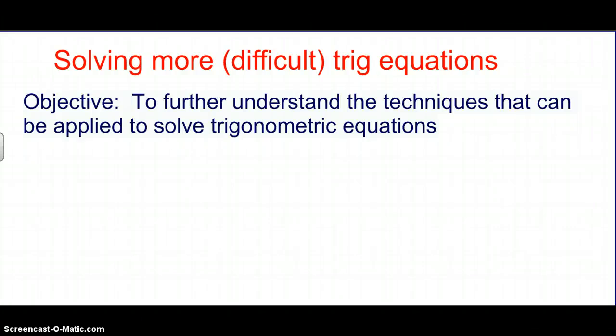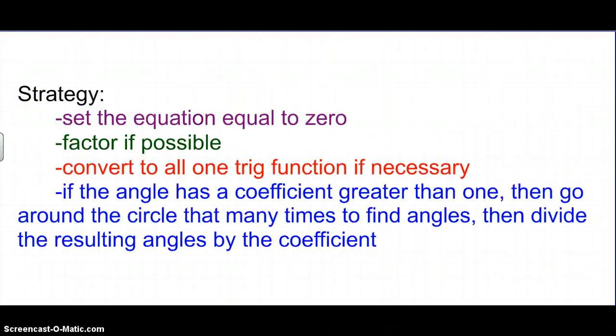Alright, we're going to pick up right where we left off with solving trig equations. Tonight we're going to solve more difficult trig equations. Please don't think about them as necessarily being more challenging, it's just that they have a little bit more algebra to get to where we need to get to. So, strategy: set the equation equal to zero, factor if possible, that's where that algebra is going to come in, convert to all one trig function, and then this part in blue about going around the circle that many times, we're going to do that. I'm going to explain why, and then I'm going to summarize that again for you at the end, but it is typed up in your packet if you need to look back at your strategy for these types of problems.